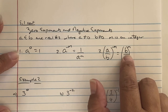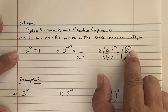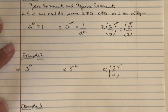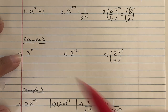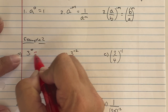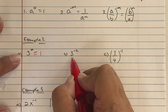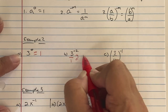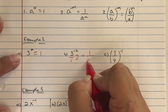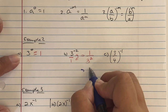If you see (a over b) raised to the negative m, you invert — flip the numerator and denominator — so it becomes b over a and the exponent becomes positive. For Example 2: 3 to the zero power equals 1 by the zero-power rule. For 3 to the negative 2, think of it over 1 and swap directions: 1 over 3 squared, which is 1 over 9.